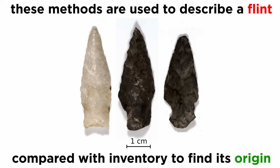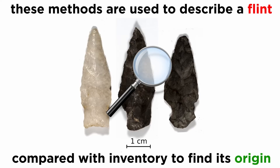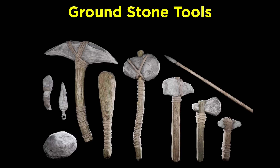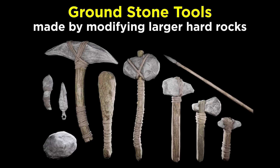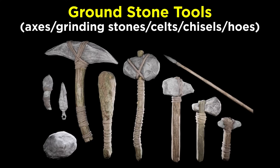These identification and analysis methods have given us a good idea of how to spot a lithic point and the basics of descriptive analysis. However, many other lithics exist besides points. Another large group of lithic tools are ground stone tools. Ground stone lithics were made by modifying larger hard rocks into tools. Several artifact types fall into this category, including stone axes, grinding stones, kelts, chisels, and hoes.